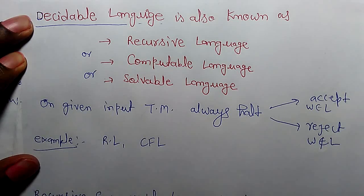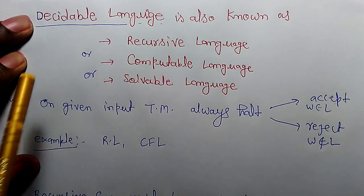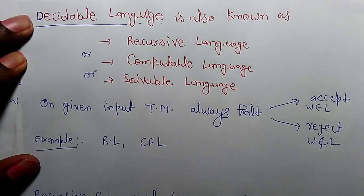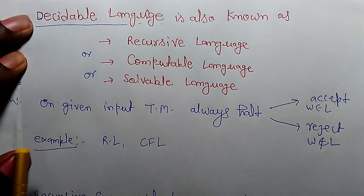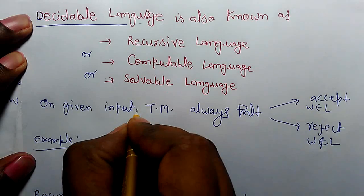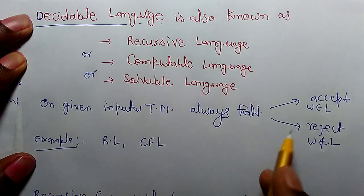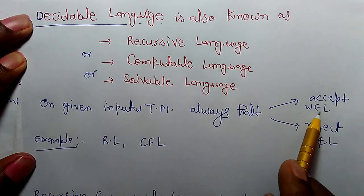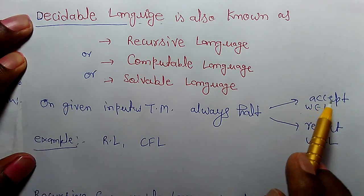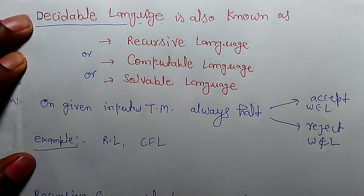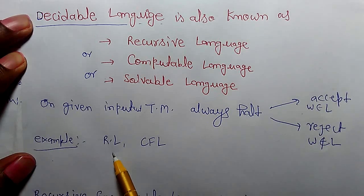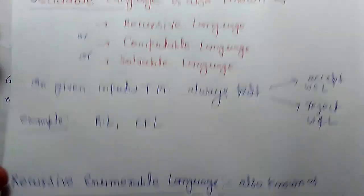In the last class we learned about decidable language, which is also known as recursive language, computable language, or solvable language. The definition is: on a given input w, a Turing machine always halts either in an accept state or a reject state. If w belongs to the language, it accepts; if it does not belong to the language, it rejects. Examples of decidable languages include regular languages and context-free languages.